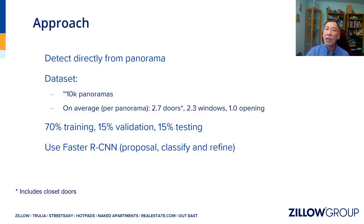Rather than sampling local perspective images from panoramas for training and testing, we opted for detecting directly from panoramas. The dataset consists of about 10,000 panoramas of home interiors, with an average of six wall features per panorama. We count closet doors as well. We use 70% of the dataset for training and the rest for validation and testing, and we use a Faster RCNN architecture for detection and classification.